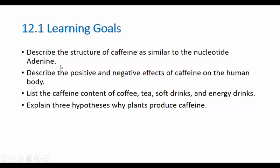Your first set of learning goals is to describe caffeine. We're going to talk about caffeine as being very similar to one of the DNA nucleotides called adenosine — very much like the nucleotide adenine, which is one of the four letters of DNA. We'll describe the positive and negative effects of caffeine, give the caffeine content of coffee, tea, soft drinks, and energy drinks as averages, and explain three hypotheses for why plants produce caffeine to begin with.